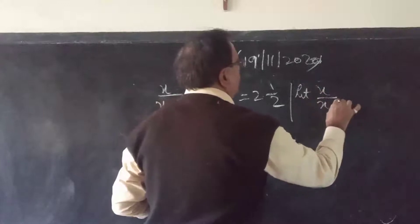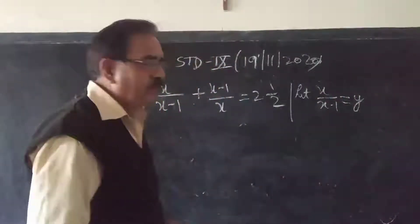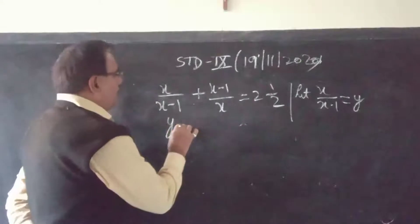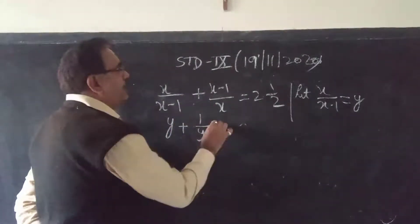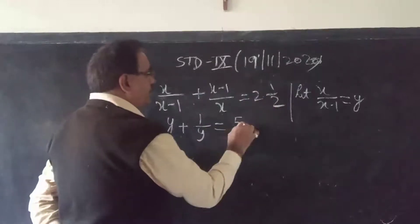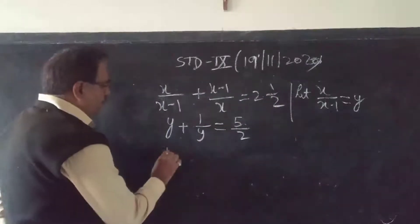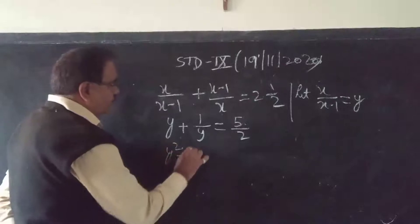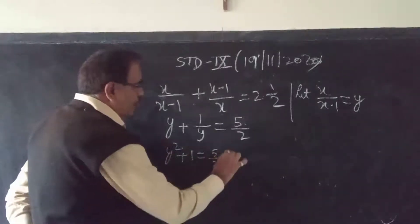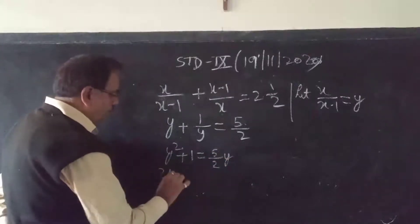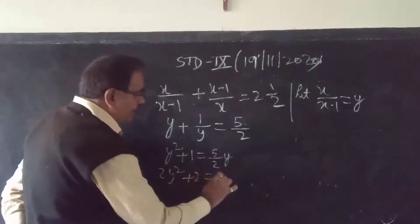Let x/(x−1) = y. Then the equation becomes y + 1/y = 5/2. Simplifying, y² + 1 = (5/2)y, which gives us 2y² + 2 = 5y.